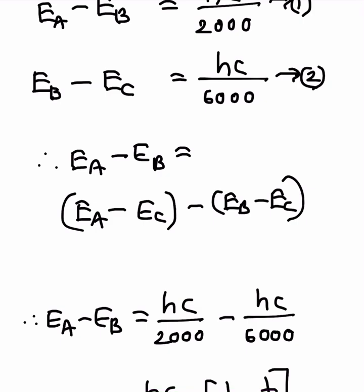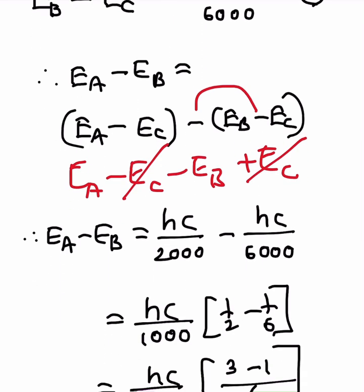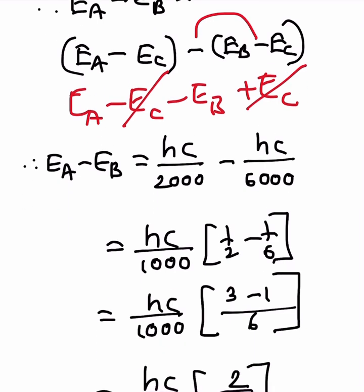To find E_a minus E_b for the A to B transition, we write: E_a minus E_b equals (E_a minus E_c) minus (E_b minus E_c). Expanding this, the E_c terms cancel, confirming it simplifies to E_a minus E_b, which is exactly what we want.